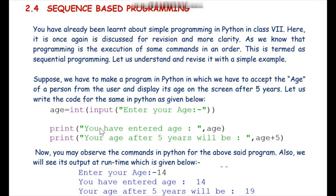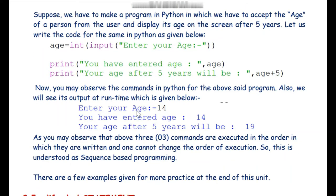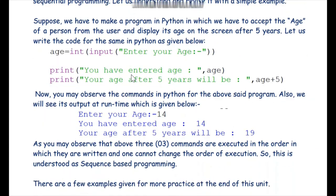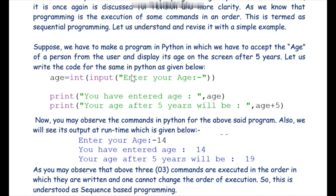The output will look like this — suppose the user enters age 14, we print 'You have entered age 14' and 'Your age after five years will be 19'. As you can see, the three statements are written in sequence and Python executes them in that particular order. This is the simplest example of sequence-based programming.